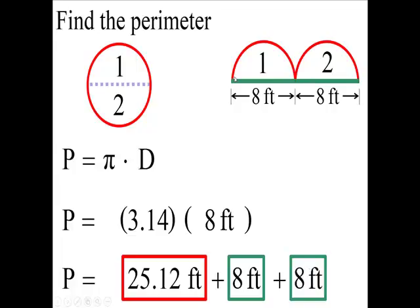So if I go this red part and this red part, I'll have 25.12. And then if I combine my two green parts, I'll have 16. When I add 16 and 25.12, I end up with the perimeter of the whole figure, which is 41.12 feet.